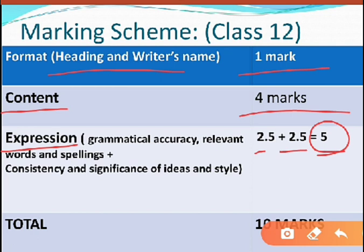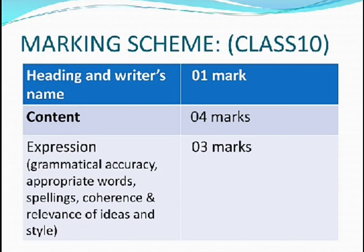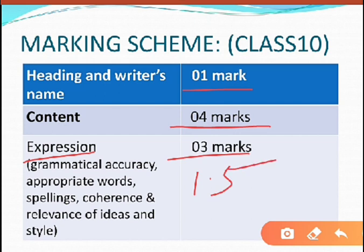Next we will see the marking scheme for Class 10. Heading and writer's name is for 1 mark. Content is for 4 marks. Expression is for 3 marks, divided into 1.5 marks for grammatical accuracy, appropriate words, and spelling, and the other 1.5 marks for coherence and relevance of ideas and style.